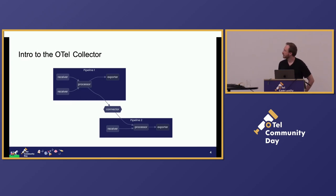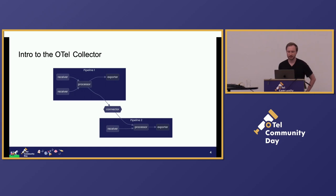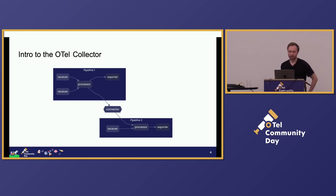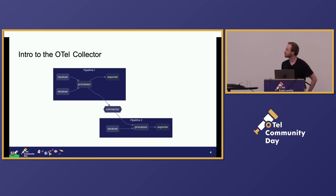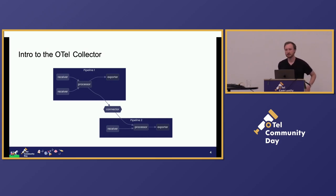So first, for anyone who isn't familiar, the collector sits as a middleware in your observability pipelines and can process and route data as it flows through. The collector's flexibility comes from its internal pipeline model, which is composed of different components that you can string together. And data comes into the collector through receivers — you'll see that on the left there — which translate an external format into the collector's internal pipeline data format.